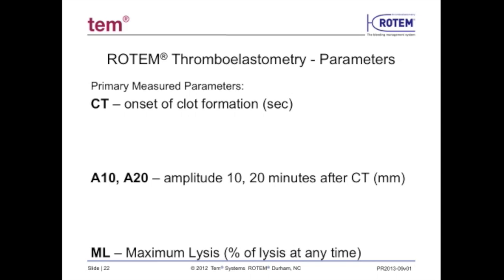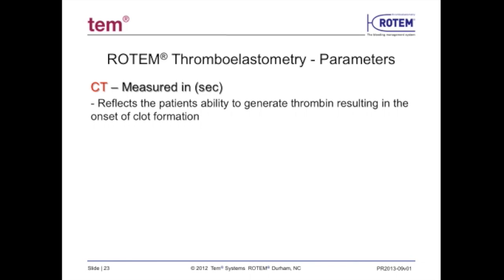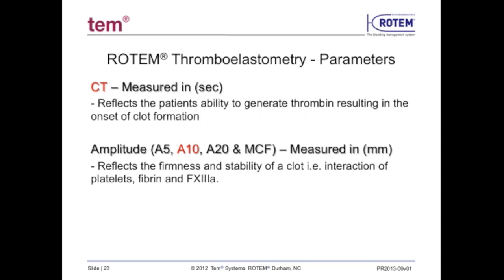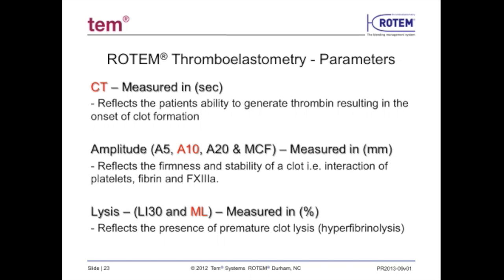The CT, measured in seconds, reflects the patient's ability to generate thrombin sufficient to result in the onset of clot formation, and is also dependent on sufficient fibrinogen availability. The amplitude parameters, such as A10, an early indicator of maximum clot firmness measured in millimeters, reflect the firmness and stability of a clot — e.g., the interaction of platelets, fibrin, and activated factor 13. The lysis parameters LI-30 and ML, measured in percentage, reflect the presence of premature clot lysis or hyperfibrinolysis.